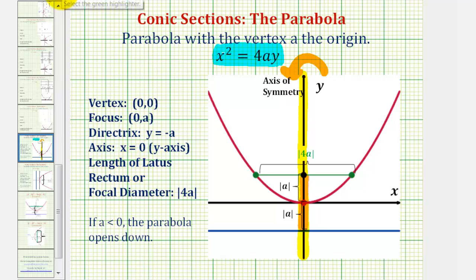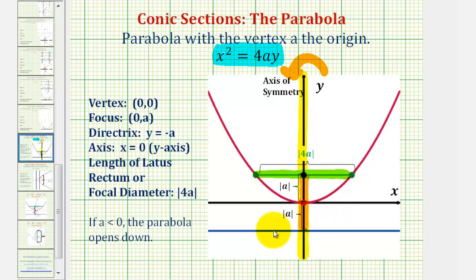This green segment here is called the focal diameter or latus rectum. It has a length equal to the absolute value of 4a. It's parallel to the directrix, passes through the focus, and has both endpoints on the parabola. So if we find the latus rectum, it will help us make a more accurate graph of our parabola.